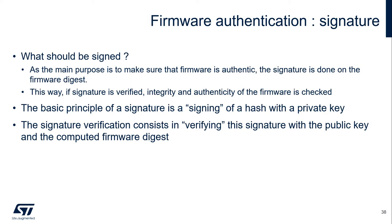For firmware authentication, a signature needs to be generated. What should be signed exactly? As the main purpose is to make sure that the firmware is authentic, the signature is done on the firmware digest. In this way, if the signature is verified, the integrity and authenticity of the firmware is also checked. The basic principle of a signature is the signing of a hash with a private key. The signature verification consists of verifying this signature with a public key and the computed firmware digest.